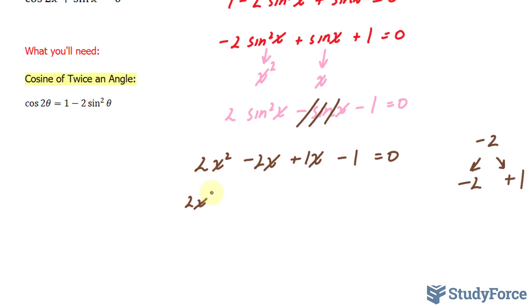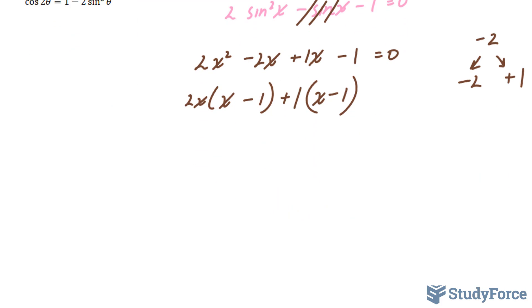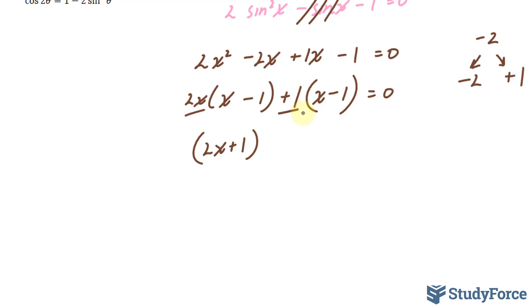Now we'll factor by grouping these two terms. There is a two and an x in common, and we're left with x minus one. And for these two terms, we have x minus one and a plus one out here. Factoring this one more time, we end up with two x plus one, this and this, and x minus one.